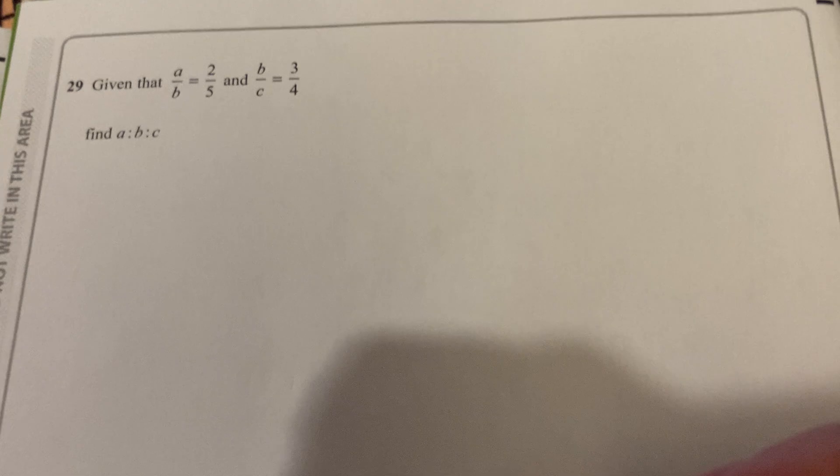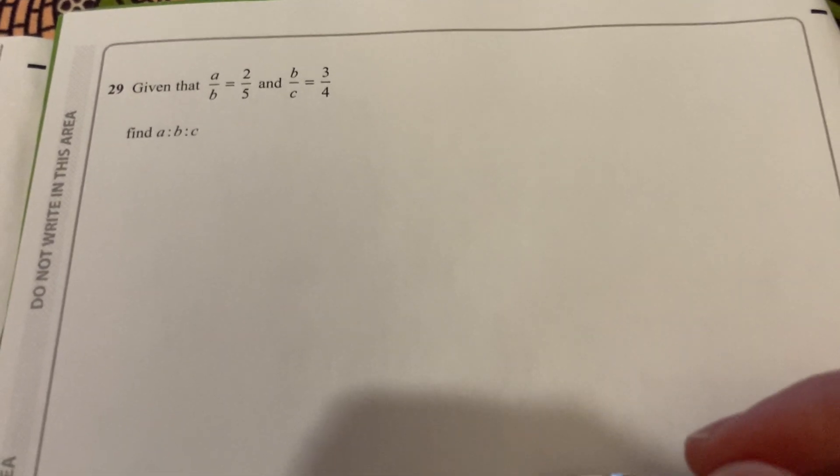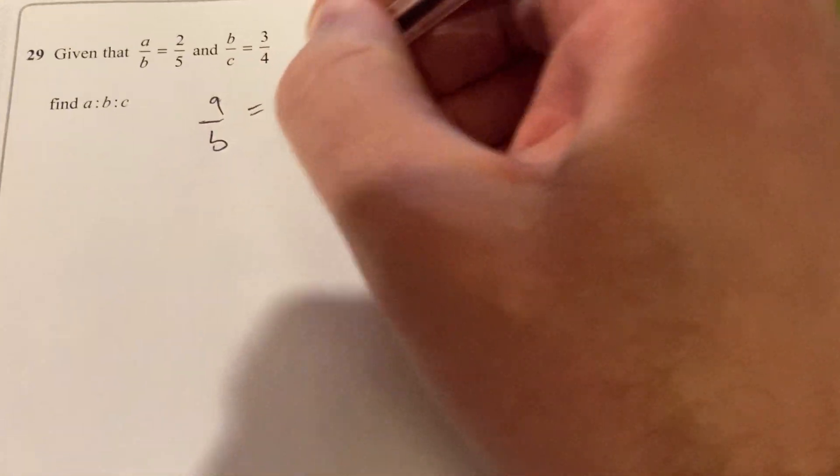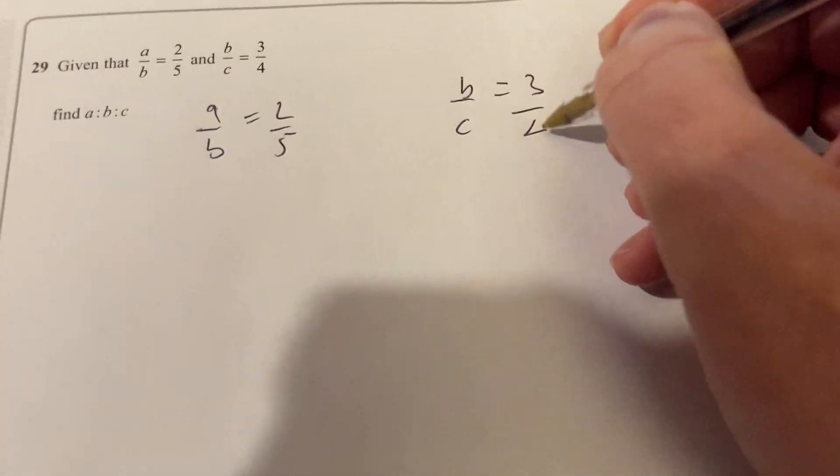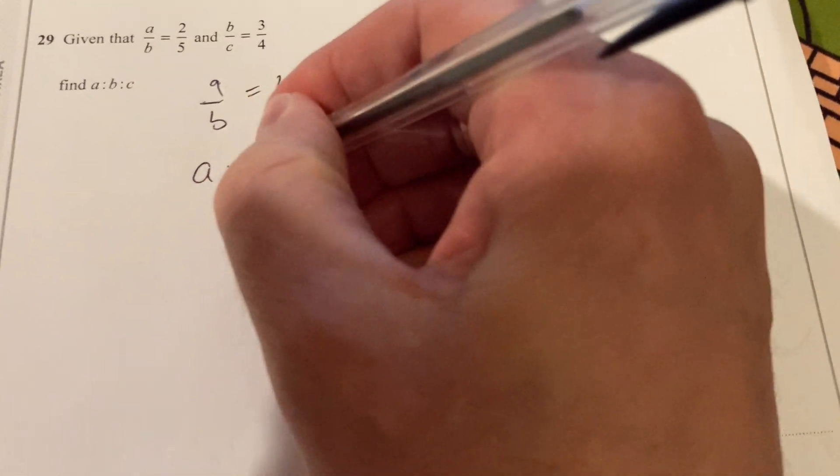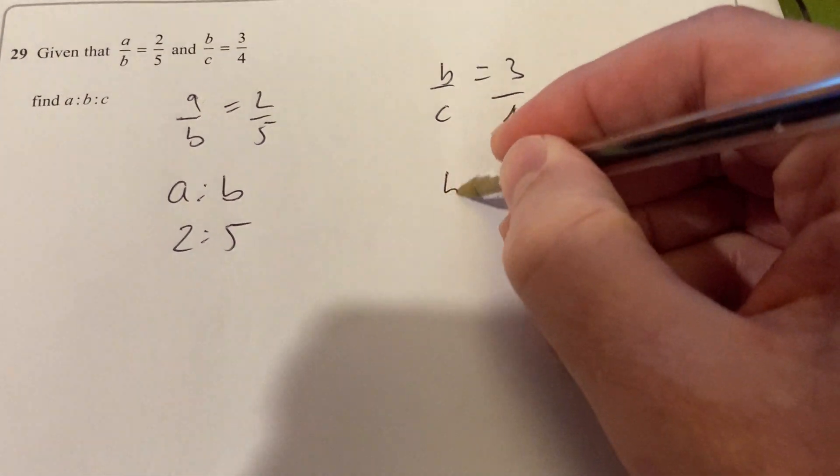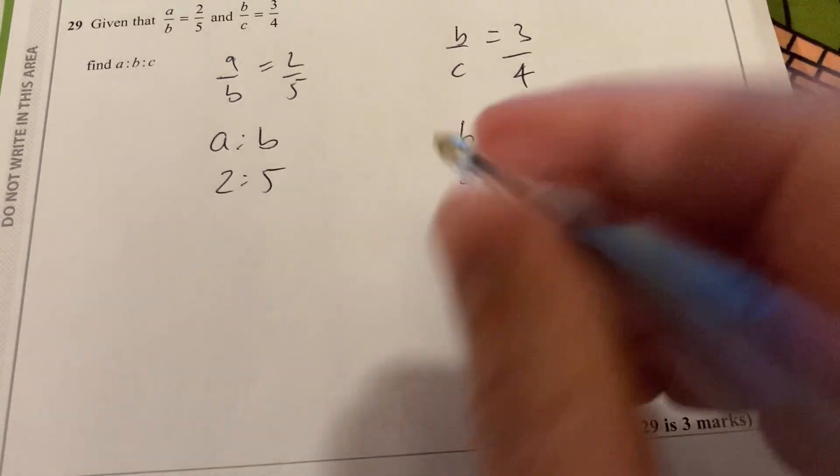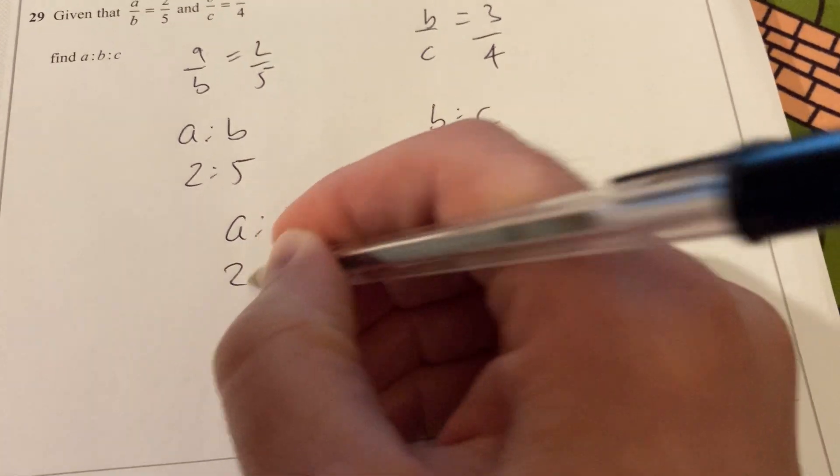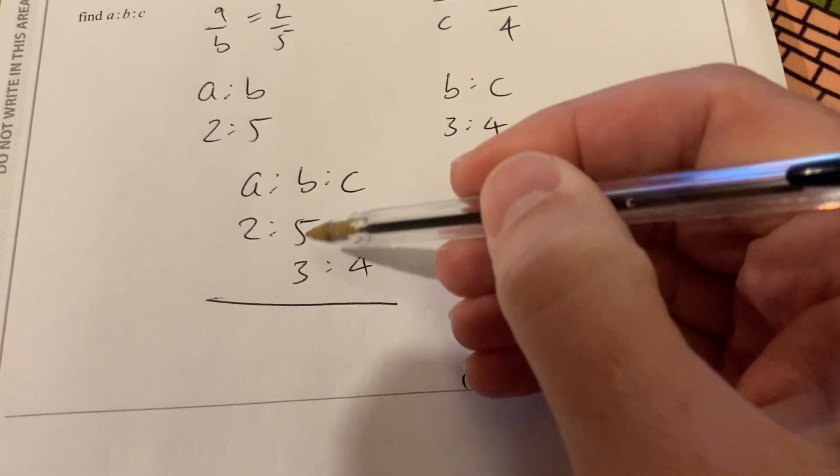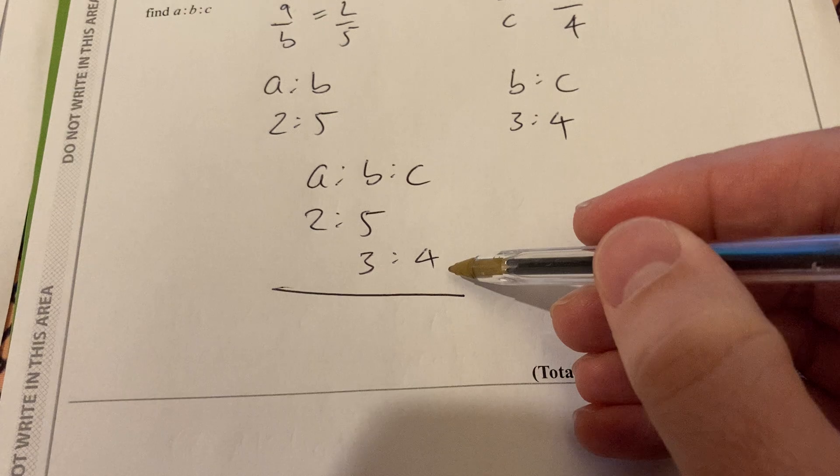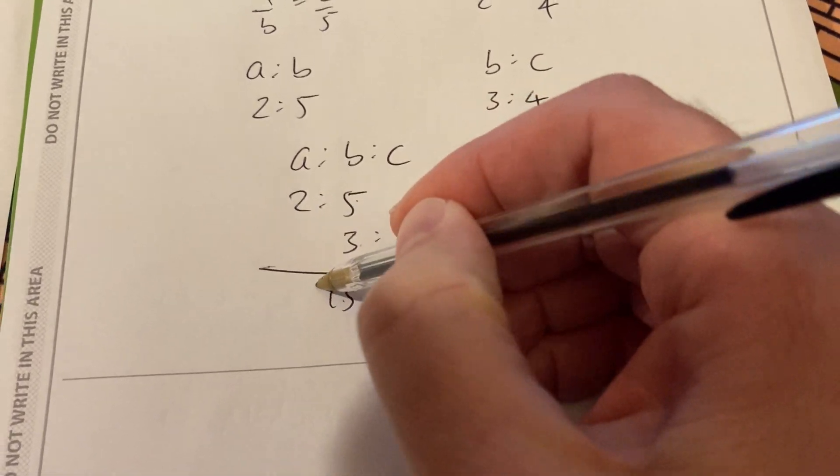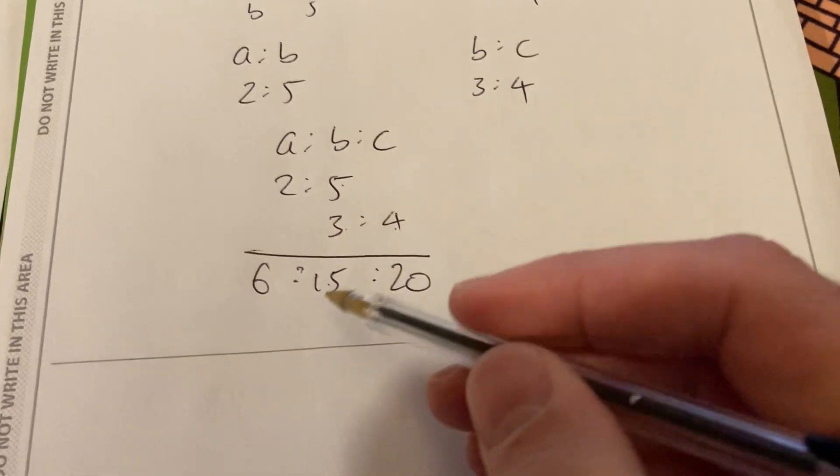Right. Question 29. We have A over B equal to 2 fifths and B over C equal to 3 quarters. We're going to turn those relationships into a common ratio. So what you can do here, A over B is 2 fifths and B over C is 3 quarters. You can turn that into A to B is the same as 2 to 5 and B to C is the same as 3 to 4. So I can nearly, I can see that I just need to combine them at the point of B, that A to B to C. So I've got 2 to 5 and a relationship of 3 to 4. So I need to find some common multiple of 5 and 3 so I can make those numbers bigger as well. So 5 and 3 both go into 15. I've multiplied the 3 by 5, so I've multiplied the 4 by 5. I've multiplied the 5 by 3, so I've multiplied the 2 by 3, and I get 6.